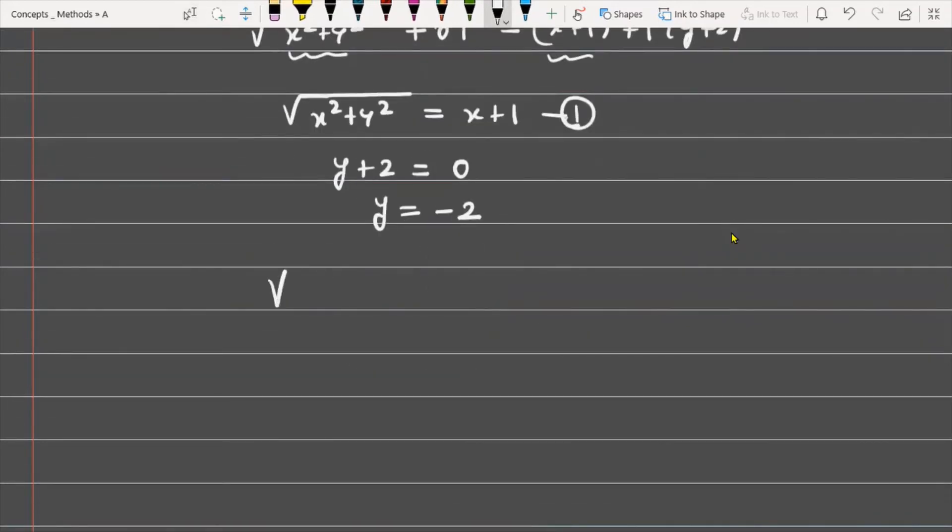Take the value of y and substitute it in equation number one. When you substitute in equation one, it becomes √(x² + 4) = x + 1. From here we will find the value of x. Just do the squaring.